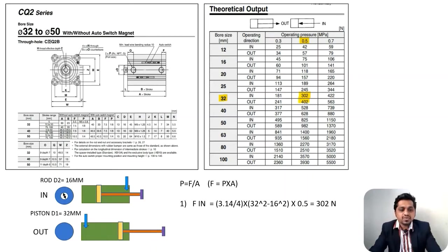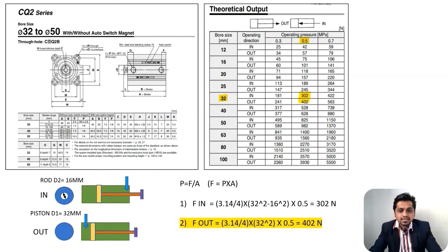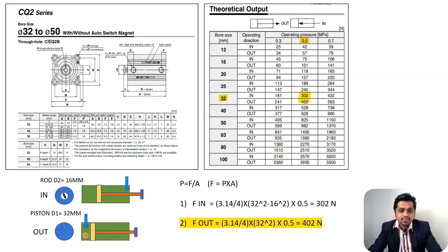For the 'out' direction, pressure acts on the full piston face. The effective area is the total piston area: A = (π/4) × D², where D ≈ 32 mm (slightly less due to bore-piston clearance). So force = (π/4) × 32² × 0.5 MPa = 402 N. That is why there are two different force values in the catalog — they correspond to the direction of actuation.